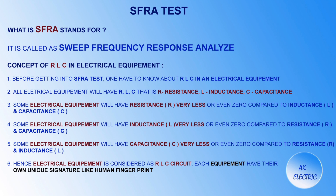Before getting into the SFRA test, one has to know about RLC in electrical equipment. All electrical equipment will have RLC — that is resistance, inductance, and capacitance. Some equipment will have resistance very less or even zero compared to inductance and capacitance. Some will have inductance very less, and some will have capacitance very less. Hence, electrical equipment is considered as an RLC circuit.